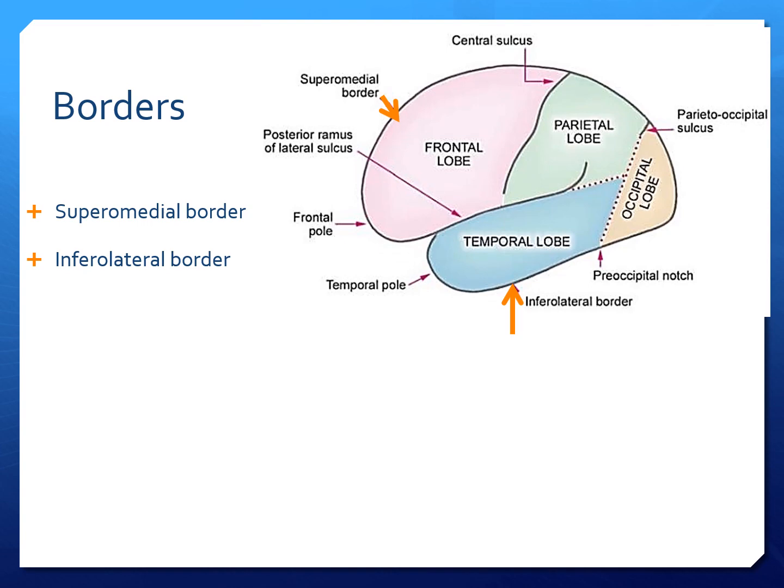There are three borders. One is the superior medial border; it extends from the frontal pole in the front to the occipital pole behind. And there is an inferolateral border extending from the temporal pole to the occipital pole. There is an arrow pointing at the pre-occipital notch, which is a slight indentation along the inferolateral border.